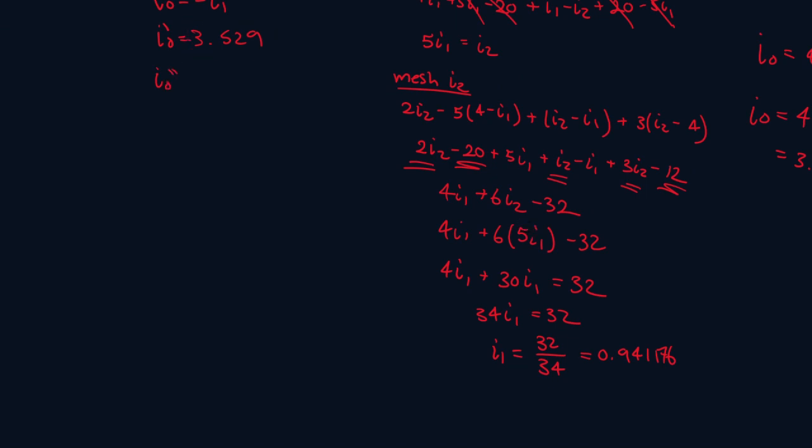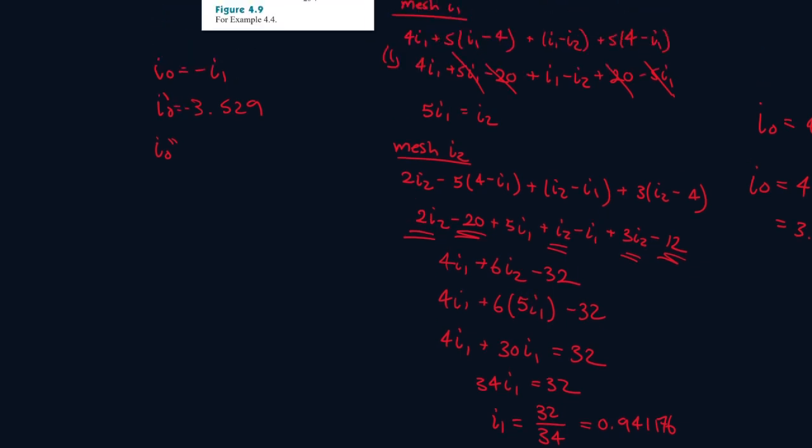This one I forgot to include the negatives because remember, I0 is equal to negative I1. So I0 prime is equal to negative I1. You get the gist. So,